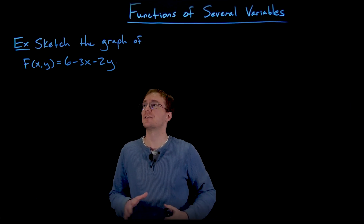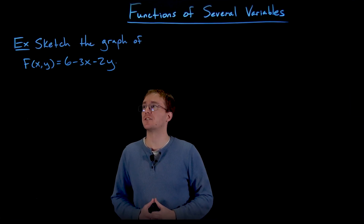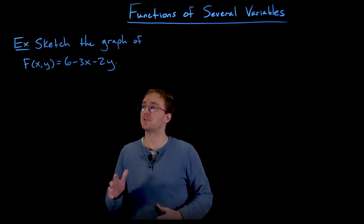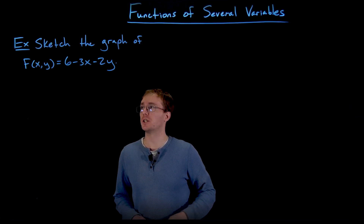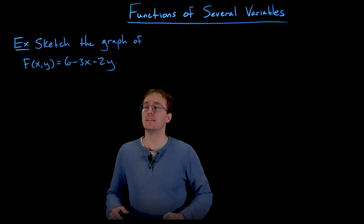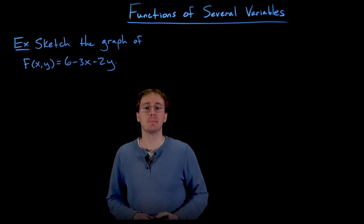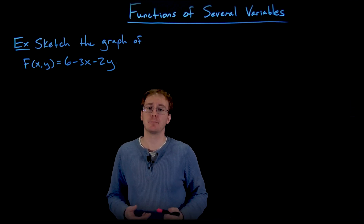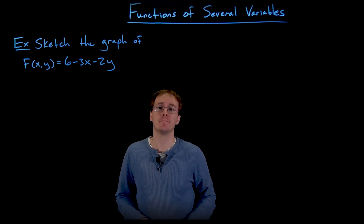Hello everyone, welcome back. In this example we're asked to sketch the graph of the two variable function f of x comma y is equal to 6 minus 3x minus 2y.